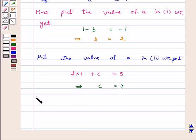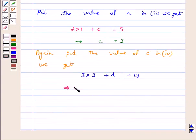Again, put the value of C in equation 4. We get 3 into 3 plus D is equal to 13, which implies 9 plus D is equal to 13, that is D is equal to 4.